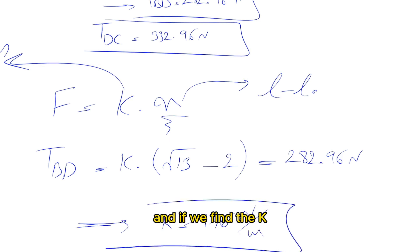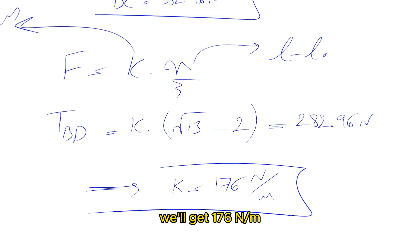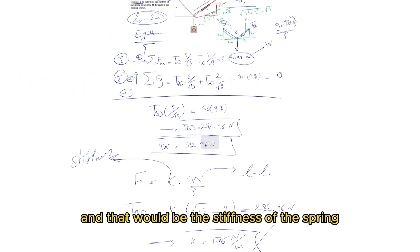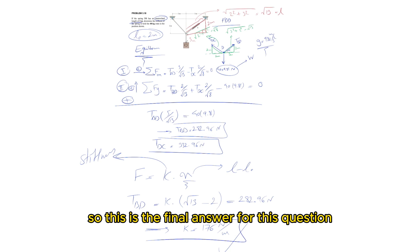The only unknown is k. Solving for k, we get 176 newtons per meter, and that is the stiffness of the spring. This is the final answer for this question.